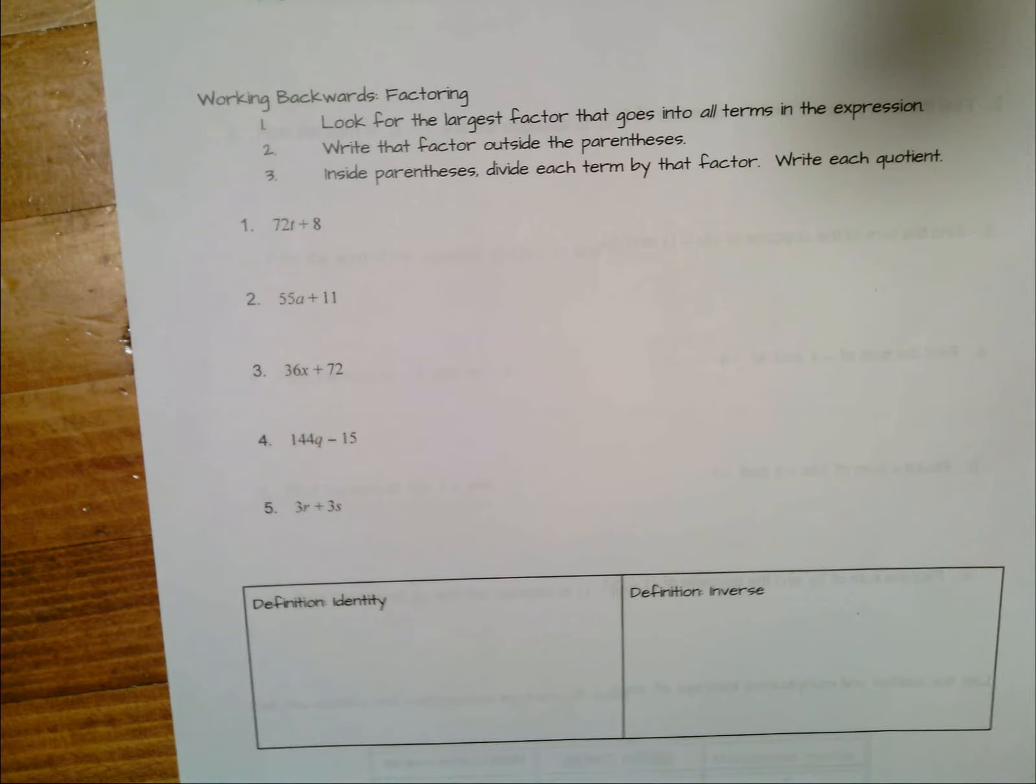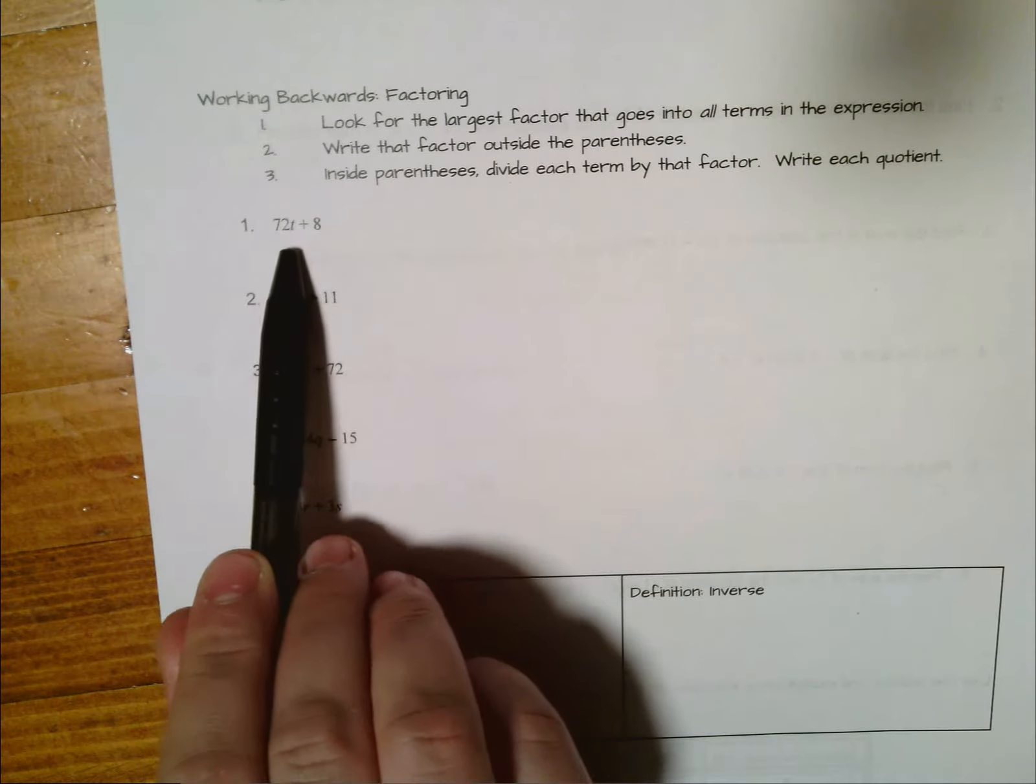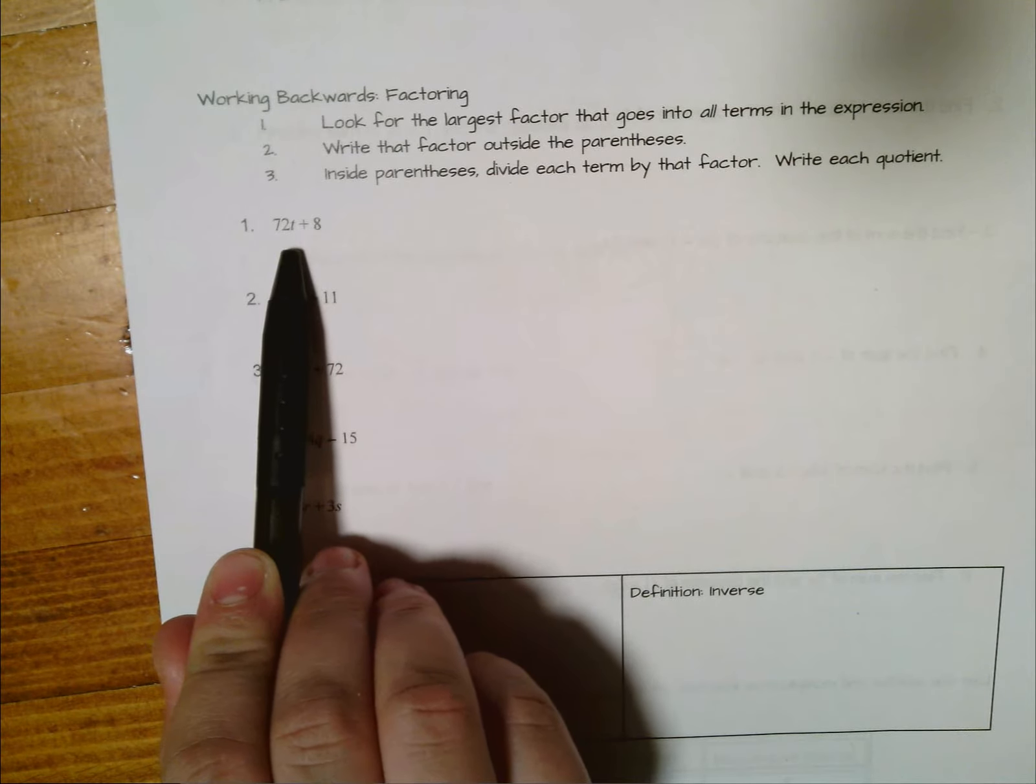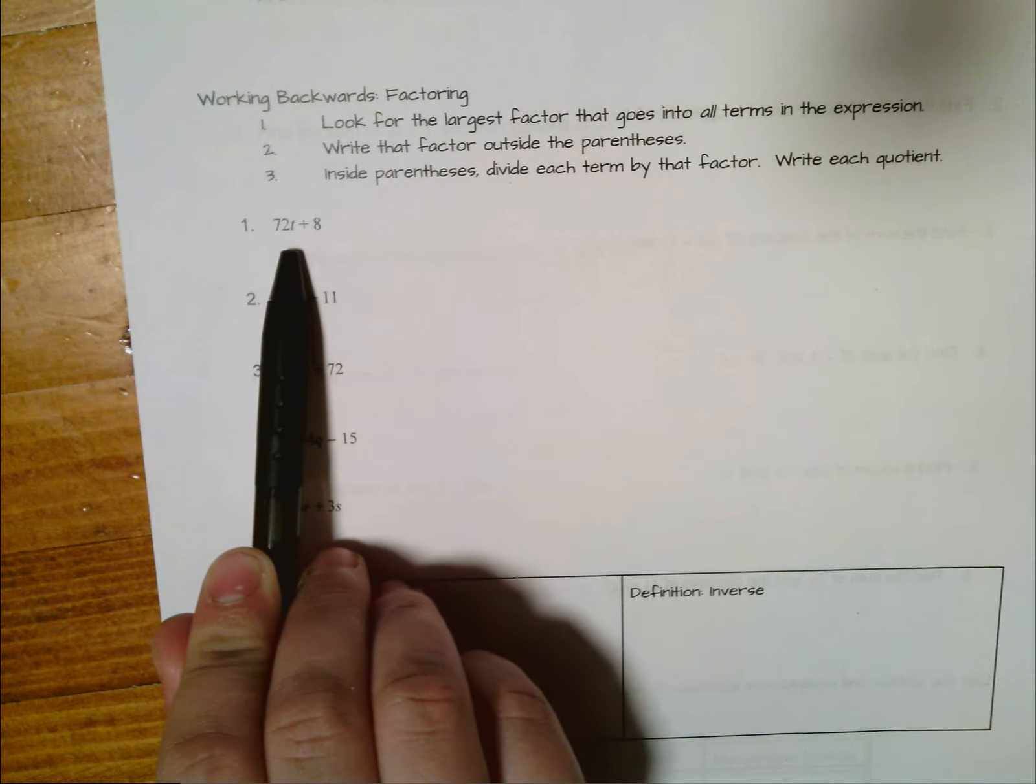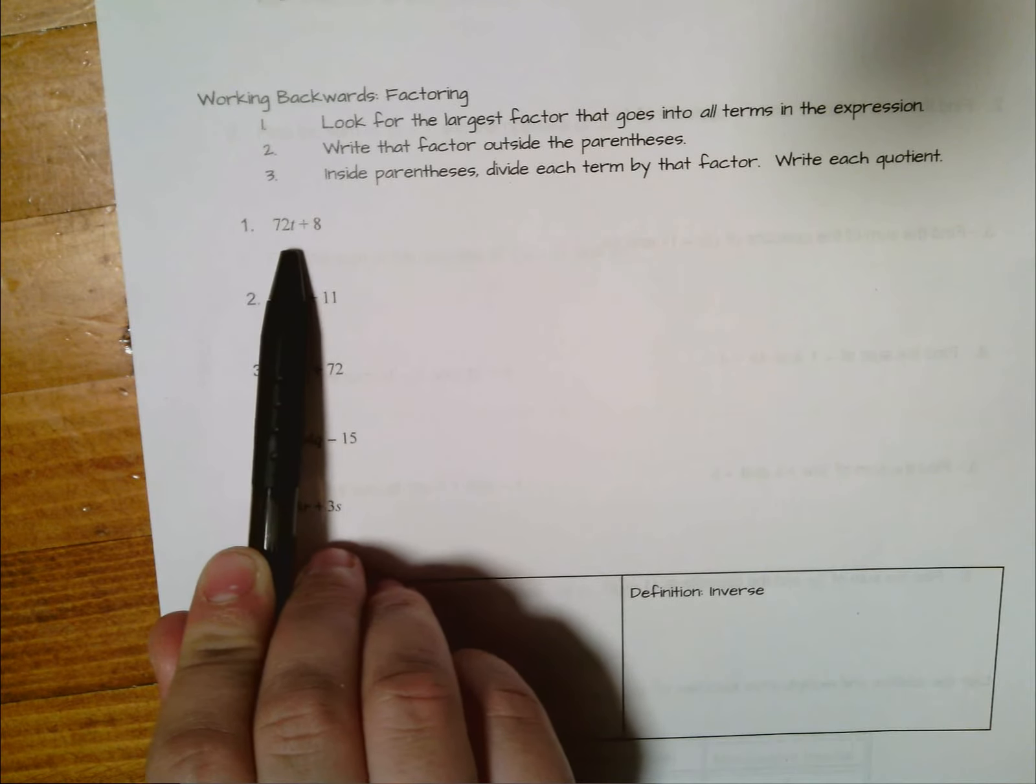Let's talk about factoring. Factoring is using the distributive property in reverse, so what we're doing is we are starting with something that is in simplest form, we're going to find the biggest common factor and then write this using parentheses instead of in its final form.